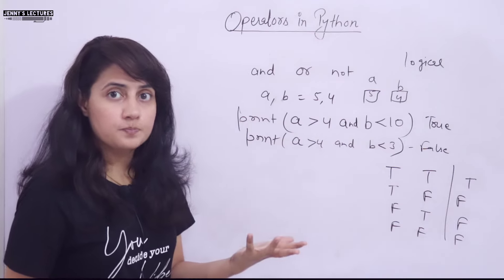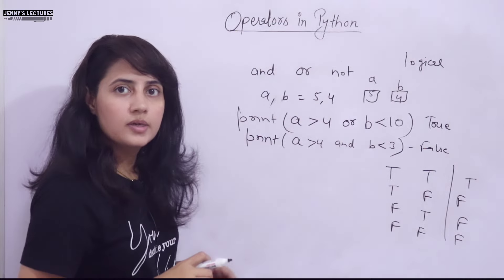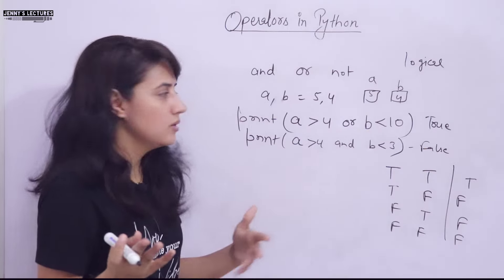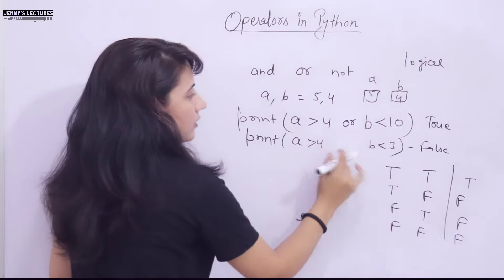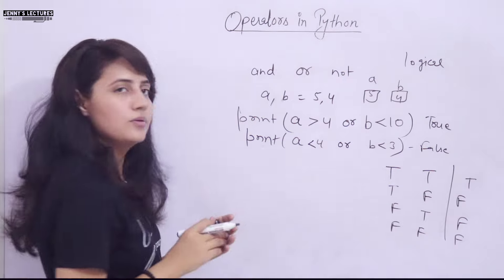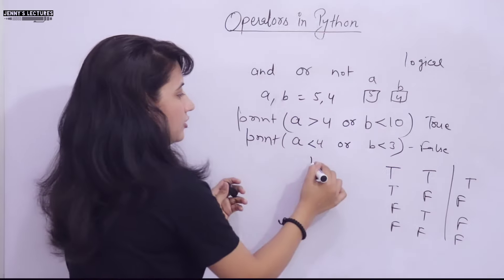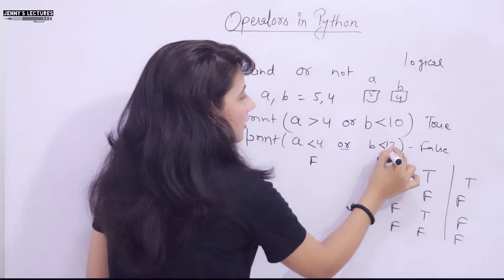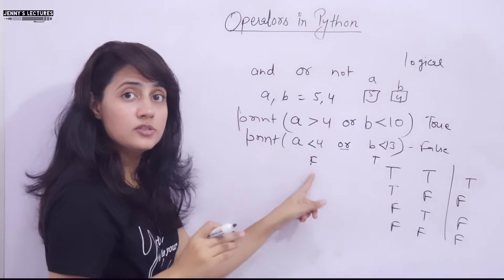Now the logical OR operator. If I write 'or', it means we want either this or this condition to be True — not necessarily both. So a > 4: a is 5, yes True, so it will give True. Now suppose I write a < 4: a is 5, so that is False. Or b < 3: b is 4, so that is also False — it will give False. But if I write b < 13, b is 4, that is True. So one is False and one is True — it will give True.